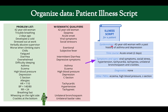We take our processed problem list and organize it into the patient illness script. Epidemiology: 42-year-old woman with a past history of asthma and depression. Time course: acute onset, two days. Signs and symptoms: viral symptoms, social stressors, hypertension, tachycardia, unilateral bronchospasm, and crackles. Diagnostics: none. This illness script for the patient will later be matched to the illness script of a disease to assess how closely they align.